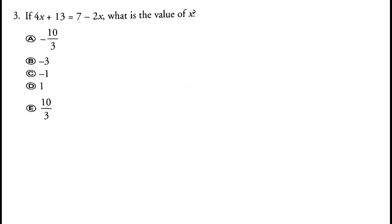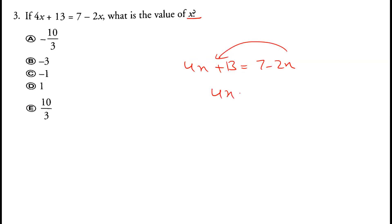Question 3: 4x plus 13 equals 7 minus 2x. What's the value of x? Moving 2x over gives 4x plus 2x equals 7 minus 13, so 6x equals negative 6, and x equals negative 1.